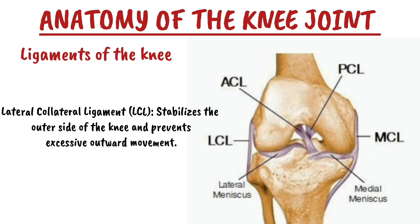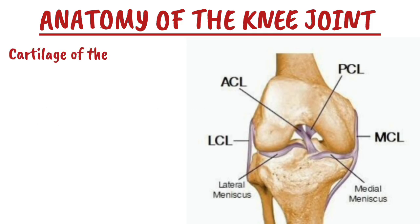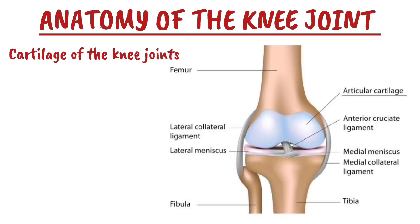Now let's talk about the cartilage and the meniscus. These play essential roles in shock absorption and smooth movement. First, the articular cartilage covers the ends of the femur, tibia, and the back of the patella — it reduces friction and allows smooth movement. Then the menisci, both medial and lateral, are crescent-shaped fibrocartilage structures that act as shock absorbers, distribute weight equally, and enhance joint stability.